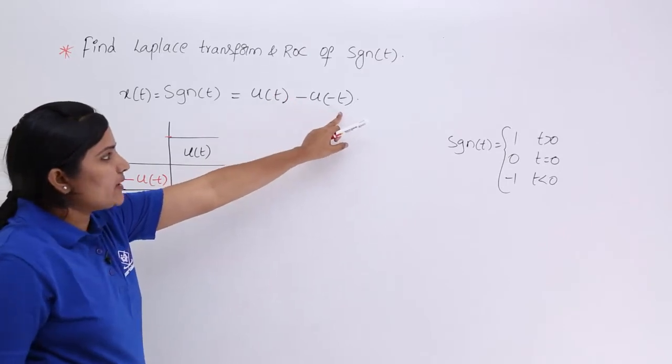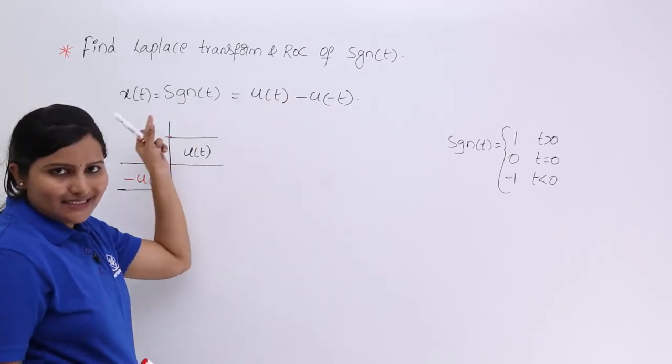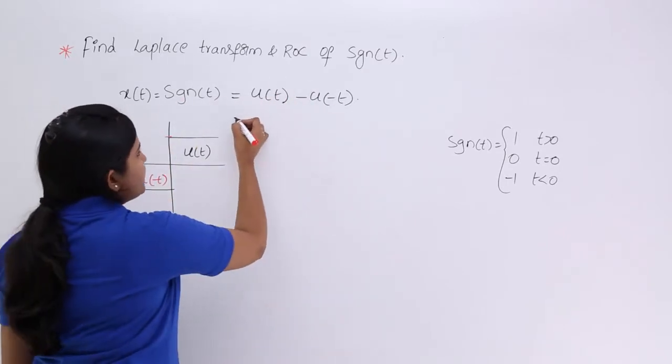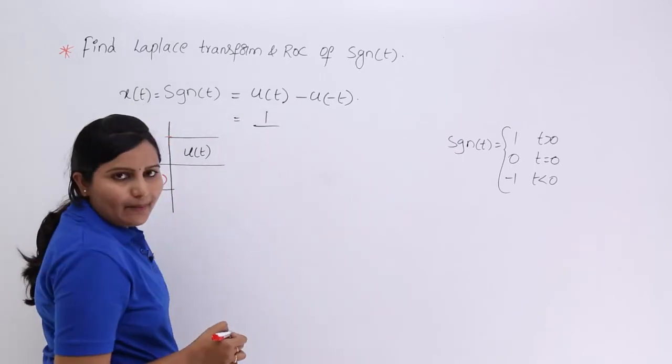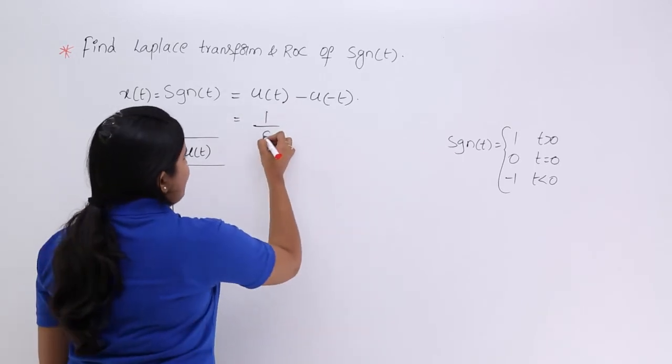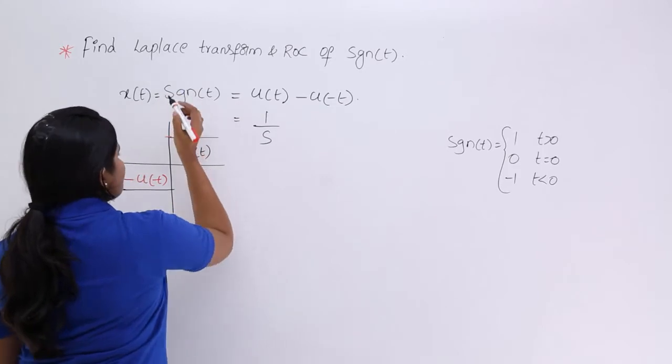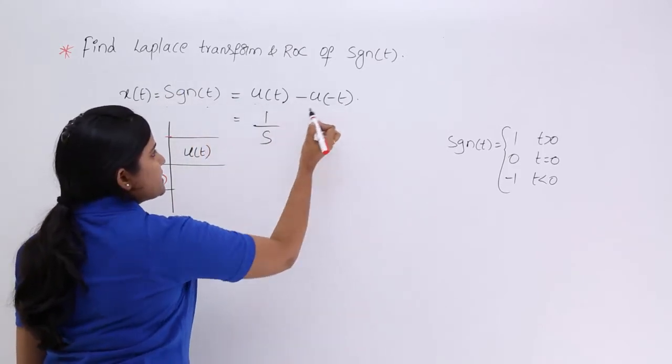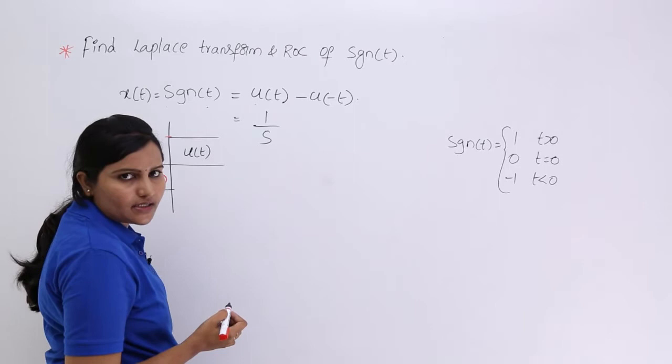U(t) minus u(minus t) will give you signum function. You know that the Laplace transform of u(t) is 1 by s. If you want Laplace transform of signum function, you can take Laplace transform of u(t) minus u(minus t).